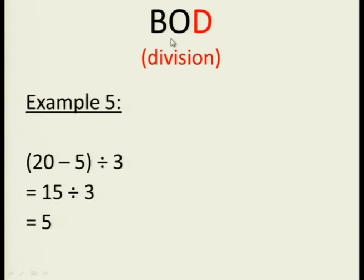After we've solved the brackets and the of, then we can do division. So look at this example 5. It says 20 minus 5 in brackets divided by 3. Because BODMAS says do brackets first, we have to do the bracket first. So we're going to say 20 minus 5 is 15. And then we divide by 3.